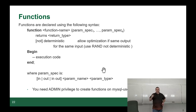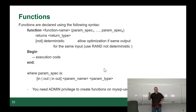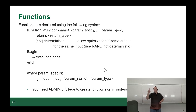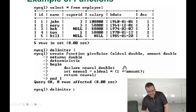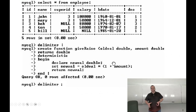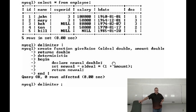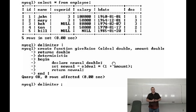The syntax is: function name, pass in parameters, tell it what it's returning. There's an important keyword: not deterministic. The parameters are literally the parameter name and the type. In an example with employees, we change the delimiter — same rule as a procedure — and create a function give_raise that takes old_value and amount, returns a double, and is marked as deterministic.